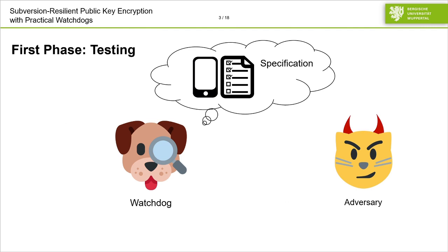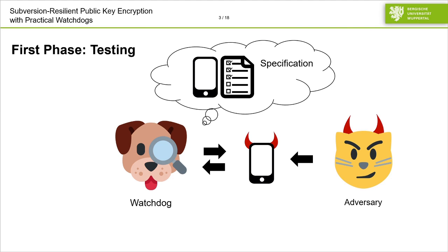In general, in this watchdog model we have two phases. In the first phase, the watchdog tests the implementation provided by the adversary. For this, the watchdog is aware of a specification, so it knows the input and output behavior of the scheme considered. After the adversary provides its implementation, the watchdog can test via black-box access whether the implementation conforms to the specification. This is done by oracle queries, so it just compares the input and output behavior.